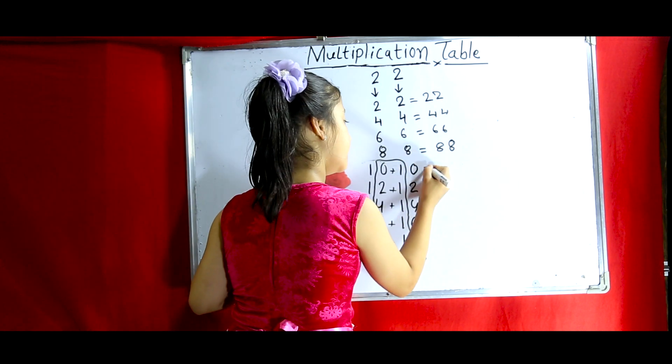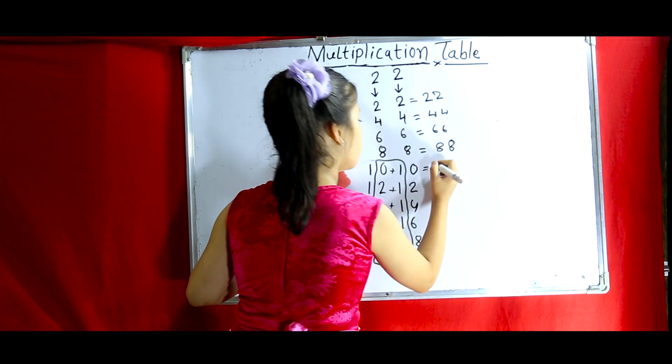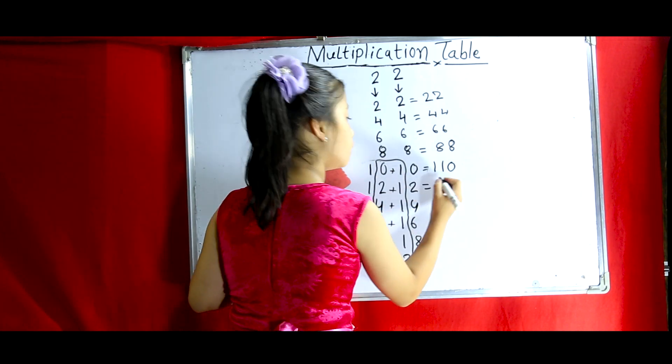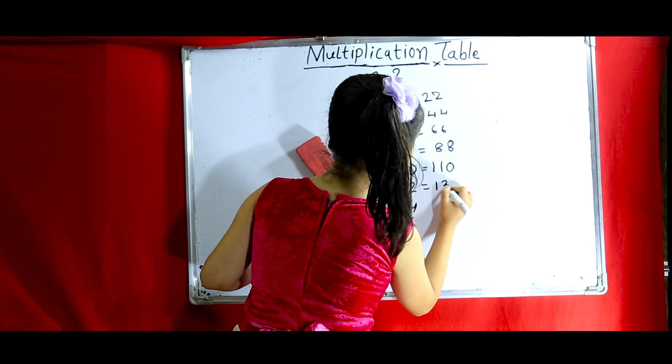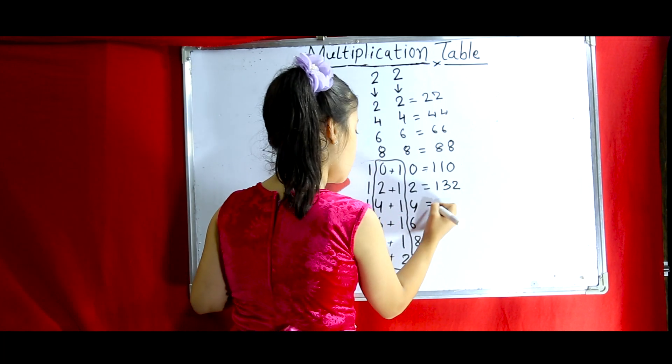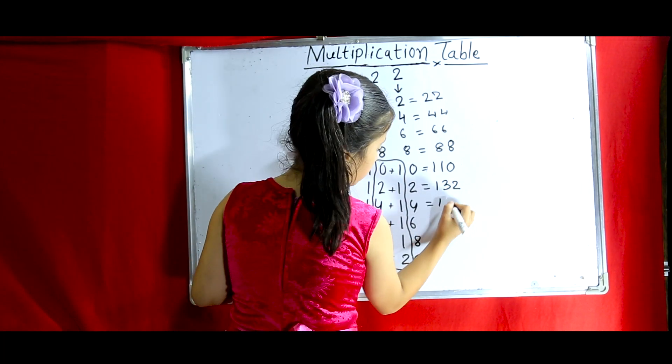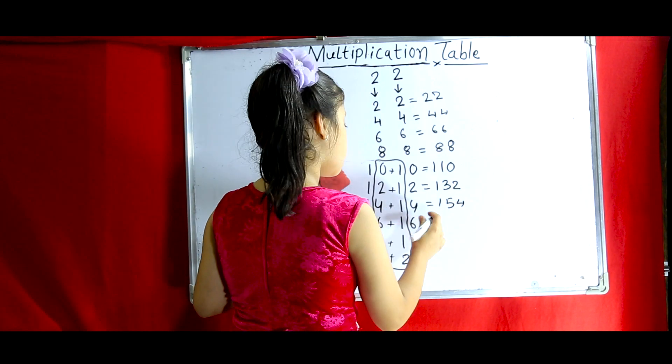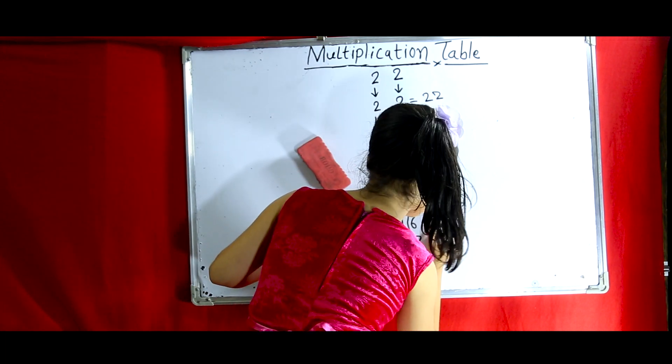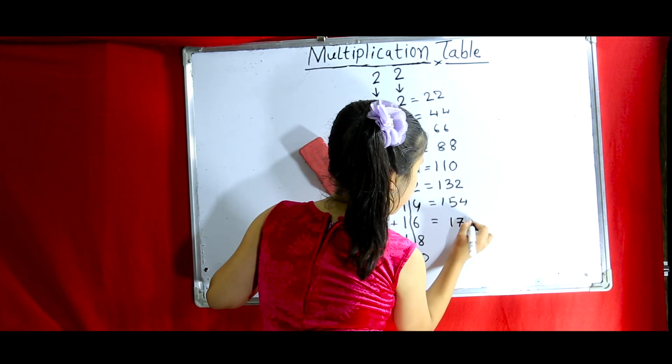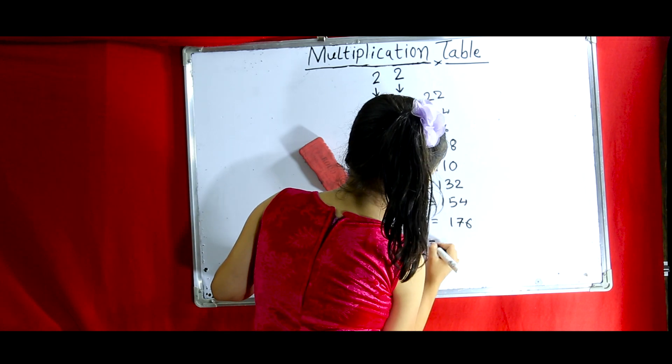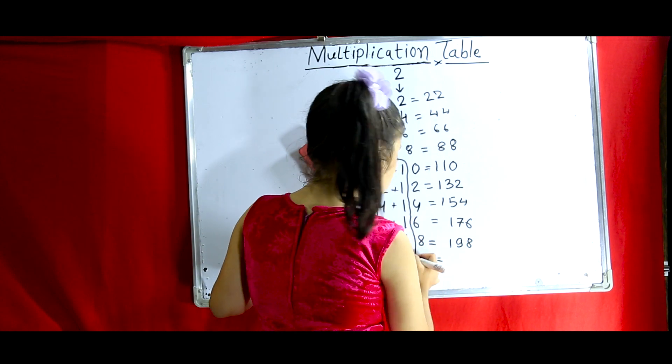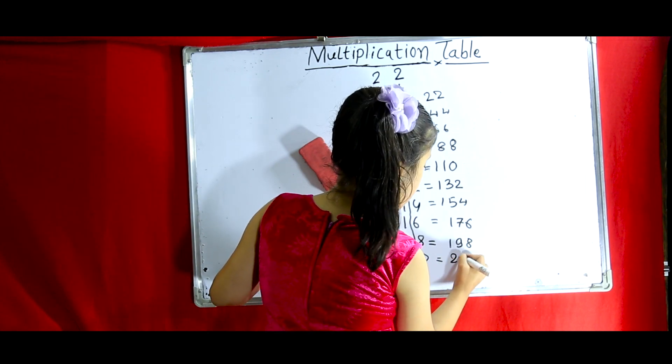From here, you have to add it. 0 plus 1, 1. So, it is 110. 2 plus 1, 3. So, it is 132. 4 plus 1, 5. So, it is 154. 6 plus 1, 7. So, it is 176. 8 plus 1, 9. So, it is 198. 0 plus 2, 2. So, it is 220.